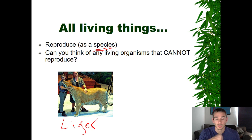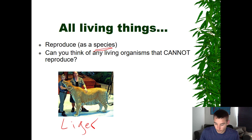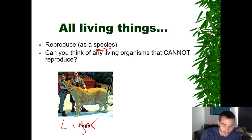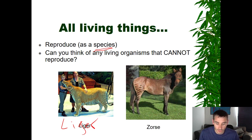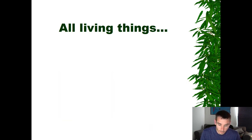However, just because a liger can't reproduce does not necessarily mean we classify it as non-living. Remember, the characteristic is to reproduce as a species. Similarly, a zorse — a mix between a zebra and a horse — also cannot reproduce on its own, but we would still call it alive.